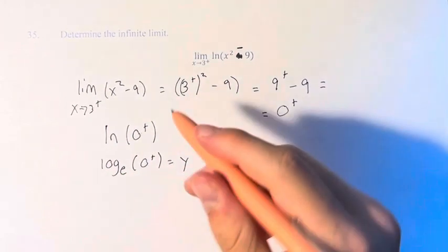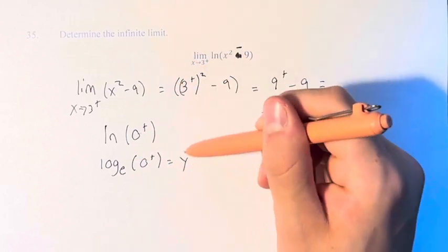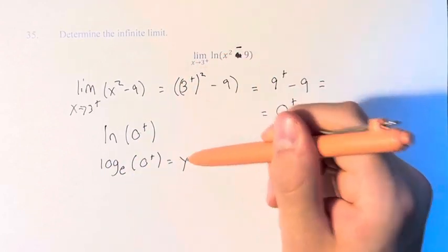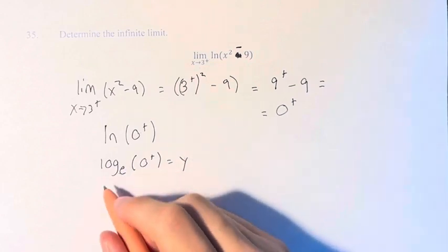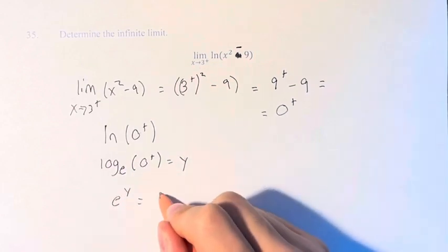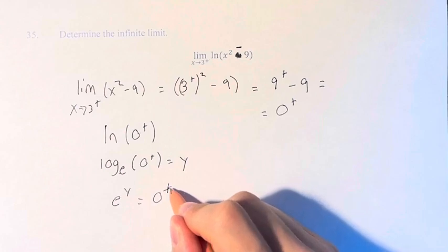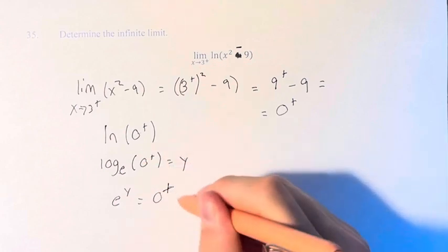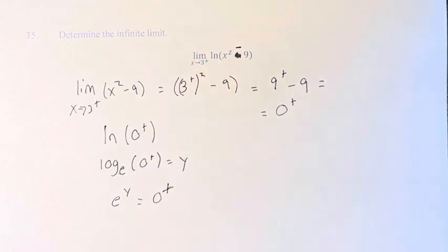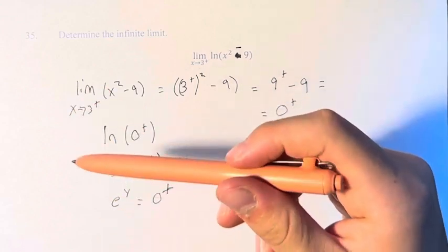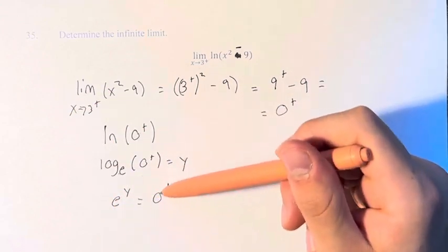Well, this is log base e of values getting closer and closer to 0. Let's just say this is equal to some y. This is going to be equal to the value of the whole limit. So we have to solve for y. We know e to the y is equal to this value, which is getting closer and closer to 0.